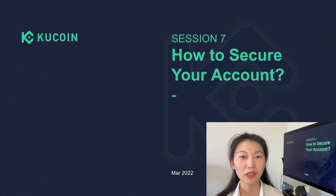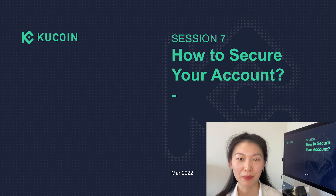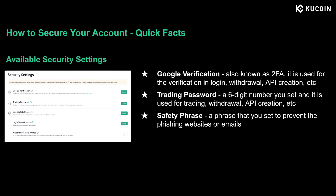In other words, once your account is bound with all three settings, even if your password is stolen, the 2FA and secret phrase can still protect your account. So in today's video, we will explain the three security settings in simple terms — Google verification, trading password, and safety phrase. Please note these are three separate settings, because previously some users got confused and thought trading password is the same thing as 2FA, but actually it isn't.